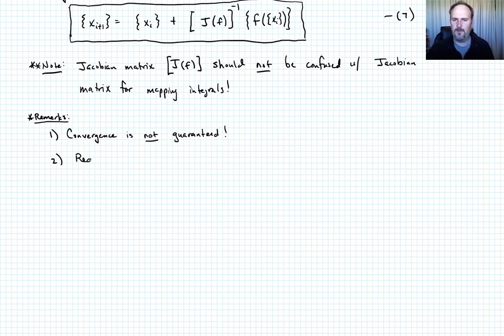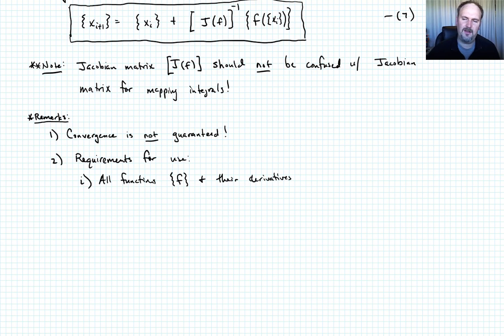When can we use this? What are the requirements for us to be able to use this method? Requirements for use. Number one, all the functions F and their derivatives must be continuous and bounded. All functions inside of F and their derivatives, their first derivatives, because if they're not, if their derivatives aren't bounded and continuous, then the Jacobian matrix will be unbounded and discontinuous, and you can't invert that. So all functions F and their derivatives must be continuous and bounded.